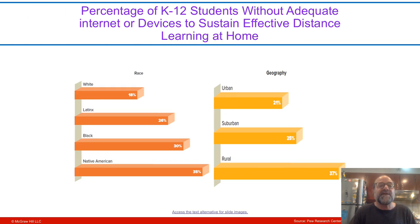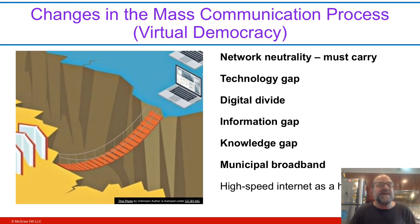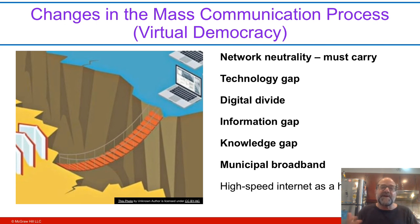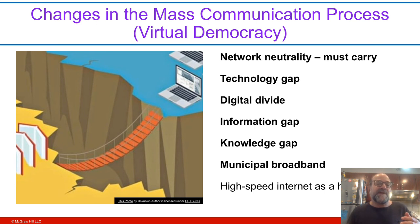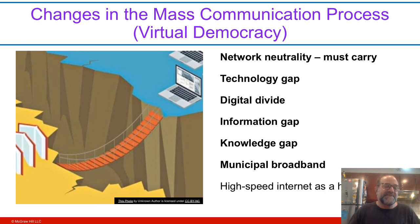We have this idea of access and the digital divide, where some of us have better, faster internet connections and some people have no internet connection at all — they have to go to a library or a friend's house. There's a divide between haves and have-nots with technology, with access, with knowledge, with high speed. The idea of must-carry and network neutrality means that everyone should be able to get information from any host. But in some countries this is not the case — if you lived in China, you might have restrictions on the internet sites you could visit.